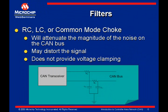The filters discussed here are used to reduce noise at the transceiver's bus pins. RC and LC are low pass filters. Common mode chokes attenuate the noise. It is very important for the components to match — any mismatch will cause unbalanced filtering or attenuation between CAN-H and CAN-L pins, which will result in distortion of the signal. Additionally, these filter circuits do not provide any voltage clamping; they only filter. Also, the filter components are susceptible to high energy transients and can be damaged. We'll discuss how to protect these circuits later.